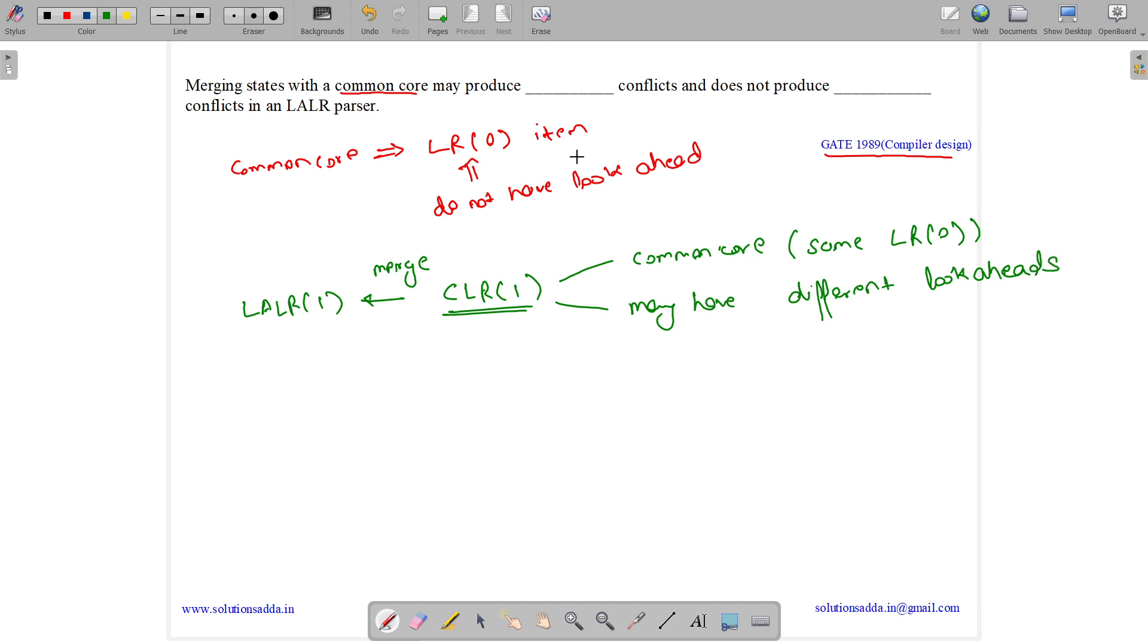When we are merging those CLR1 items to form LALR1, two conditions can occur. The first one is that in CLR1 table, if no shift-reduce conflict is there, then no SR conflict will be there in LALR1.